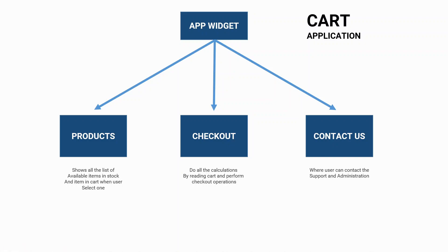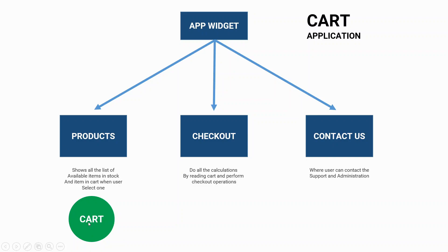Now suppose the user wants to buy some products using our cart application. He would first come to the product screen where all the items or products would be shown in some sort of a list, like a ListView. He would tap one of the items that he wants to add into the cart. So we basically need to have a cart as a state of this product widget. And as this cart object would be changed every time when the user taps an item, this product widget needs to be a stateful widget so that it can update the UI whenever the cart is changed.